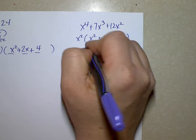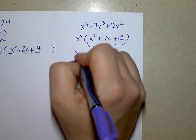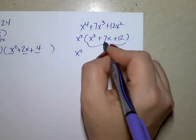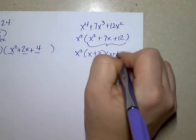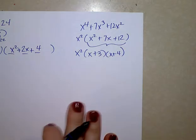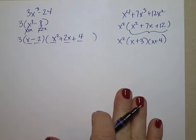Now I'm going to look at this part of the expression. What multiplies to give you 12 and adds or subtracts to give you 7? x plus 3 and x plus 4. Next one.